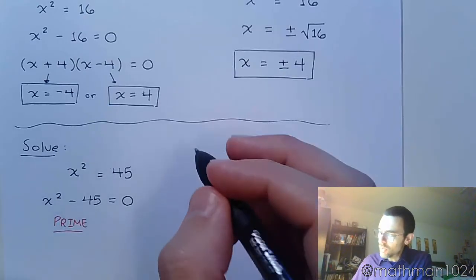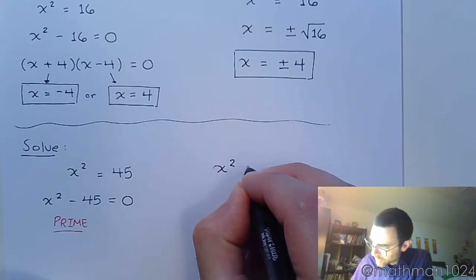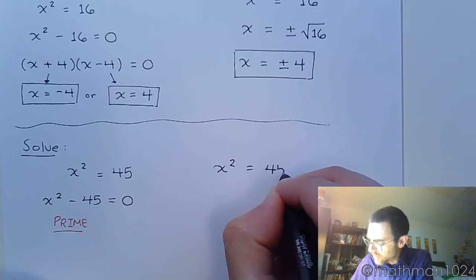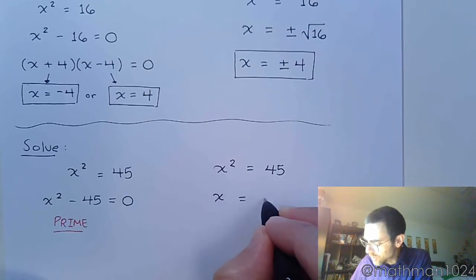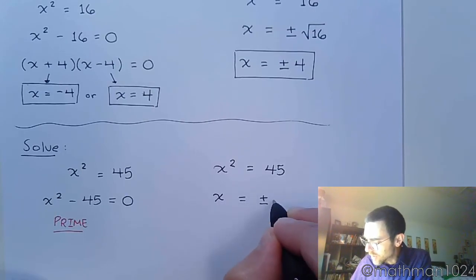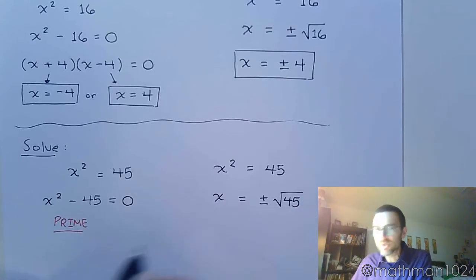But we do have that square root property. The square root property says that if you have a square by itself, you can rewrite this so that x is equal to plus or minus the square root of that other side of the equation. So plus or minus the square root of 45.